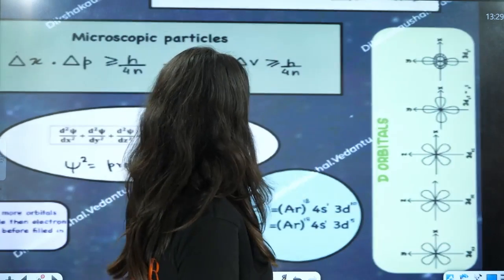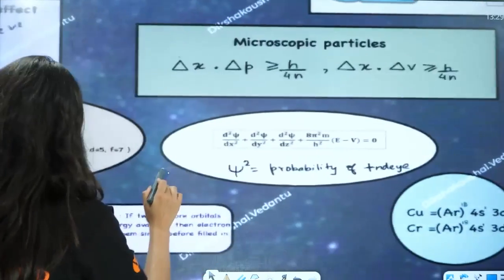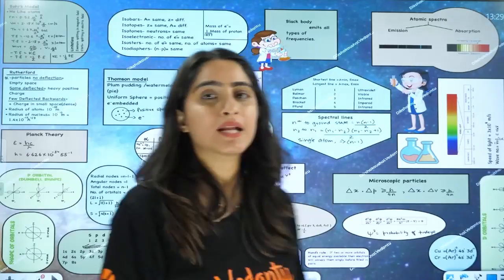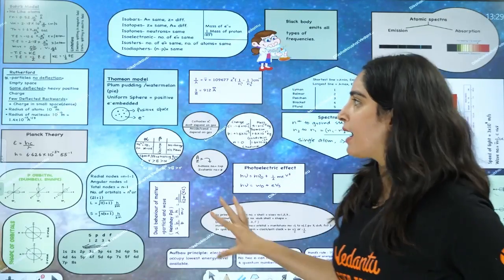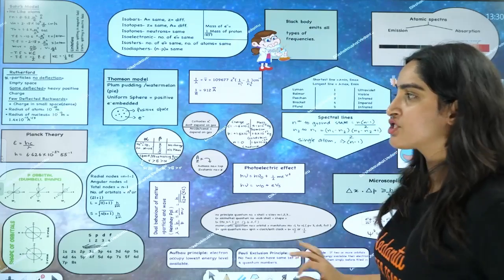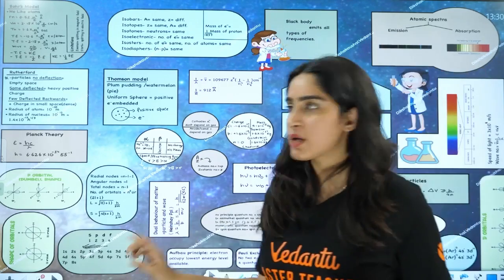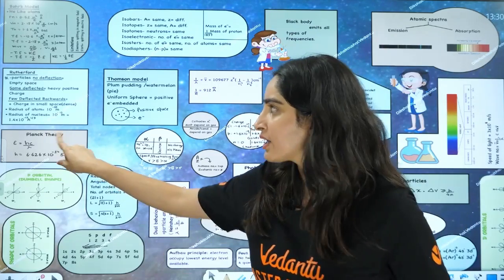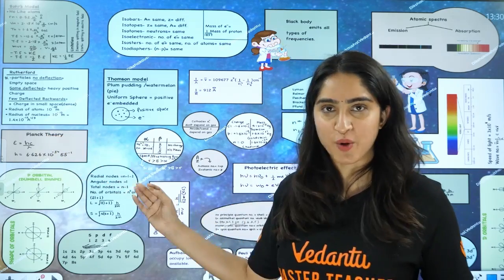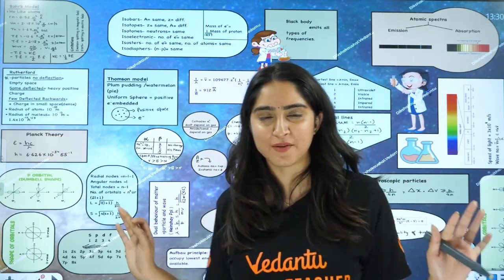So students, we have completed everything here. I will give you this mind map. One thing that was left is Planck's theory: E = hc/λ = hν, where h is Planck's constant. You have done your revision in less than 15 minutes.